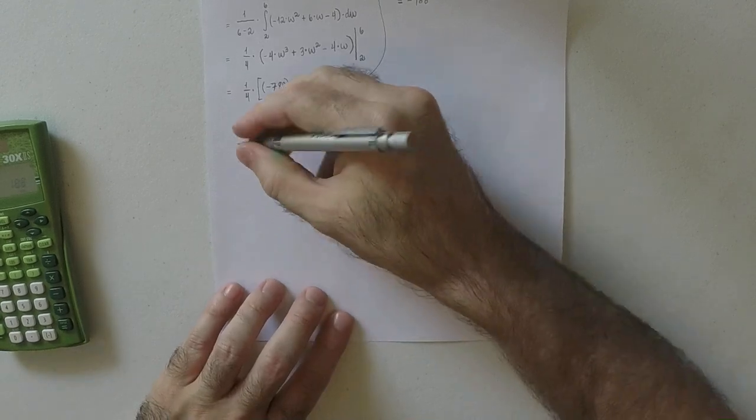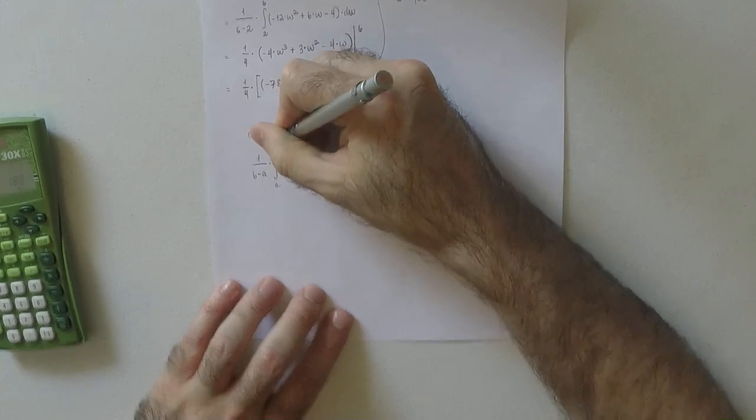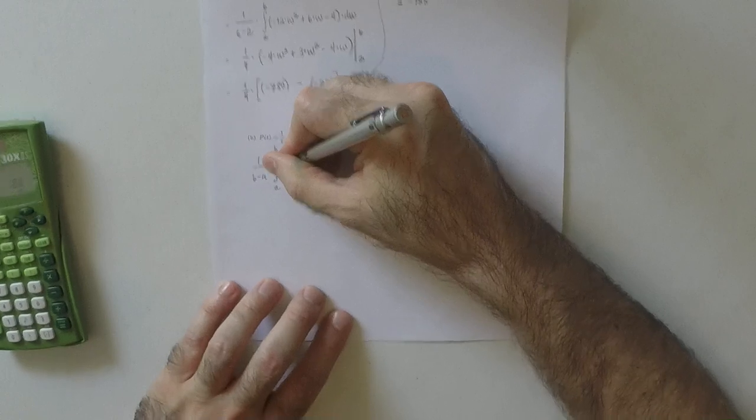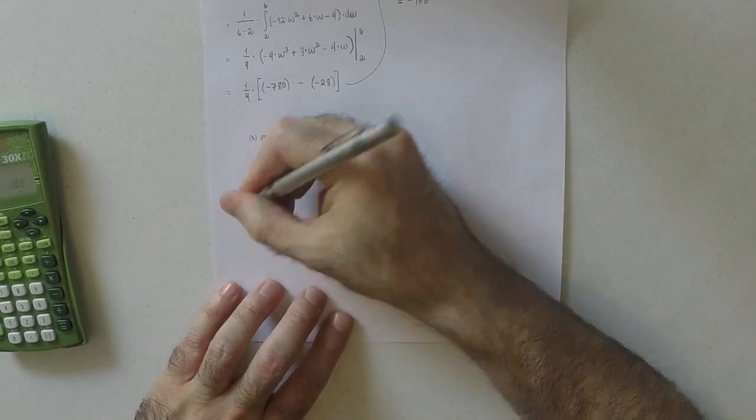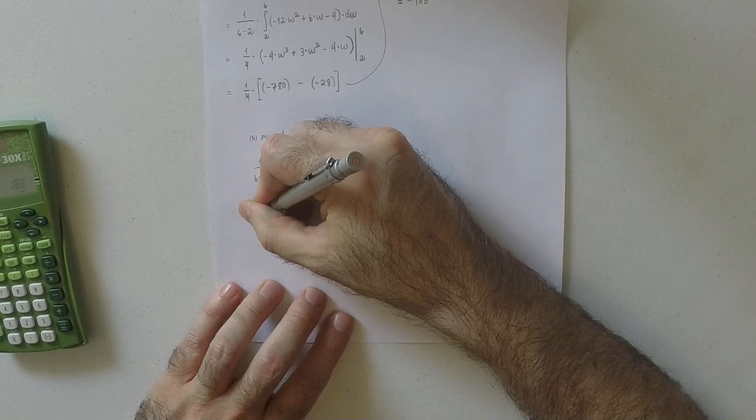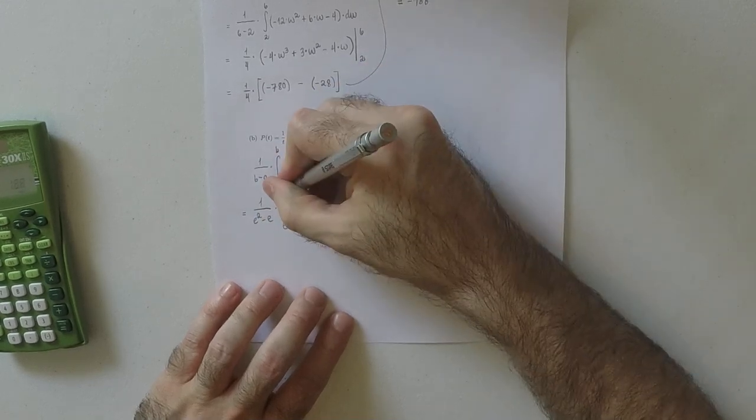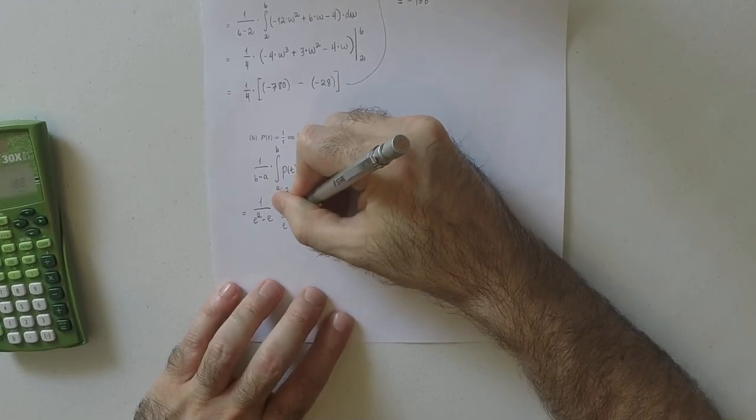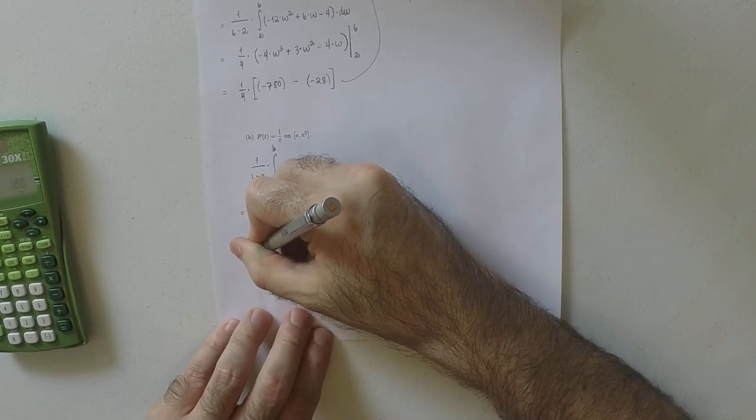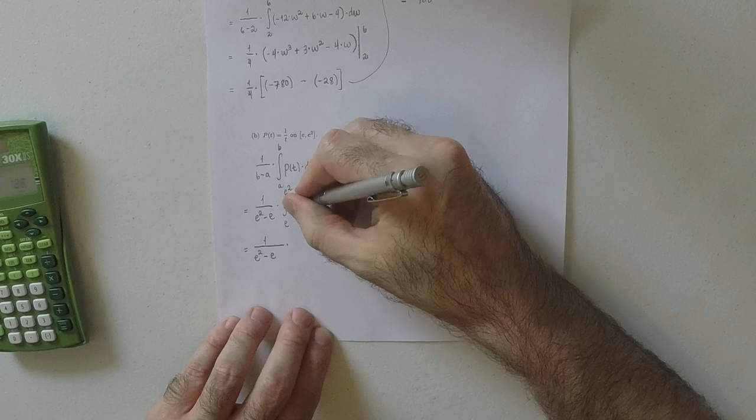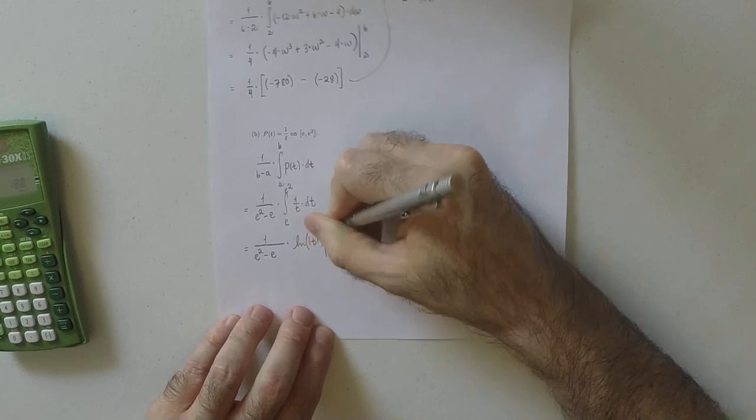Okay, similarly for this one, this would be, you know, 1 over b minus a integral a to b, and then a p of t dt. And on this specific exercise, that would be 1 over e squared minus e integral e to e squared. And then antiderivative of 1 over t is log absolute t. And we're going to evaluate this from e to e squared.